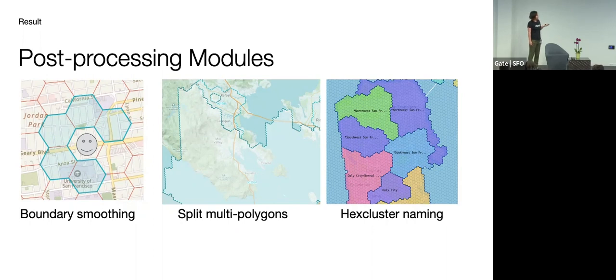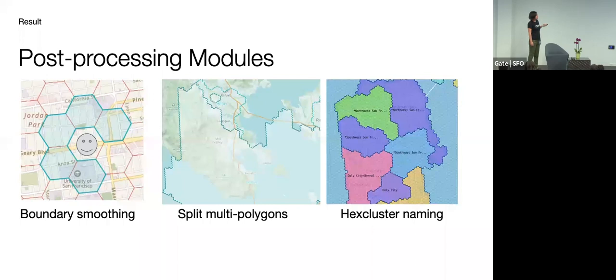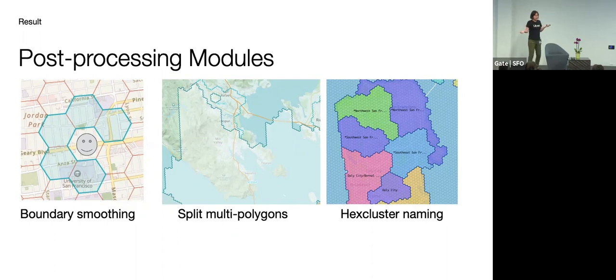And one problem actually entails is we are starting to see disjoint hex clusters as shown here. So why is that? So before we do the boundary smoothing, there's actually a bridge in between these two zones. But now with this aggressive smoothing, what happens is for the things on the bridge, they think that most of their neighbors belong to a different hex cluster. So they get reassigned.